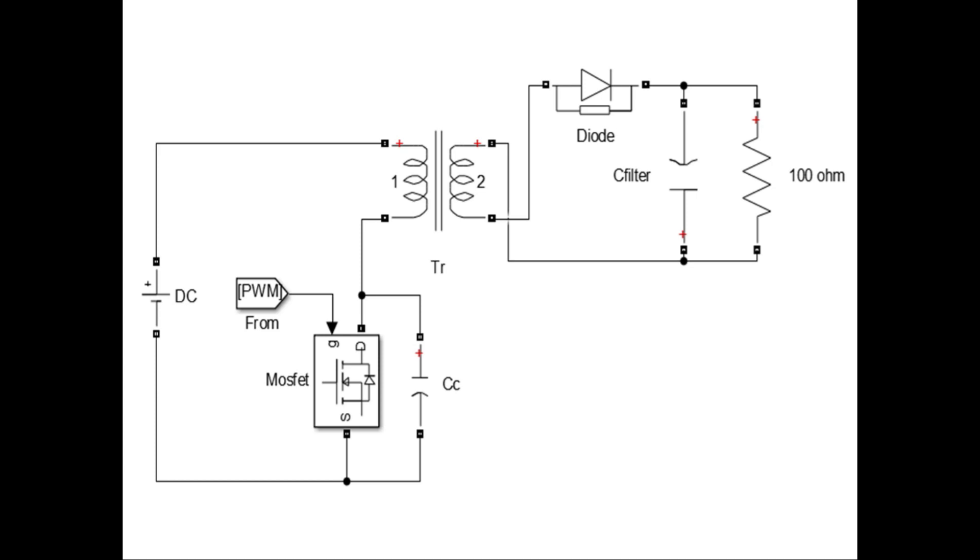Now assume that the CC capacitor is charged by absorbing the spikes. During the next turn-on cycle, when the primary of the flyback transformer is conducting, the energy of the transformer and capacitor CC will be dumped into the MOSFET because the MOSFET's drain and source will be shorted during turn-on. This will prove hazardous for the switching MOSFET.